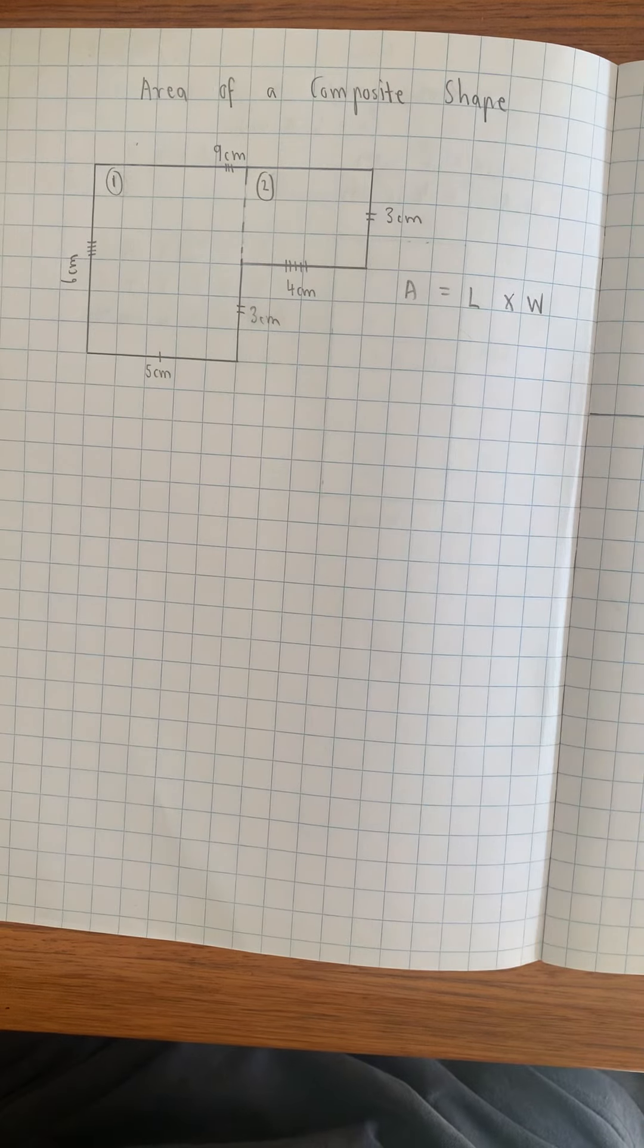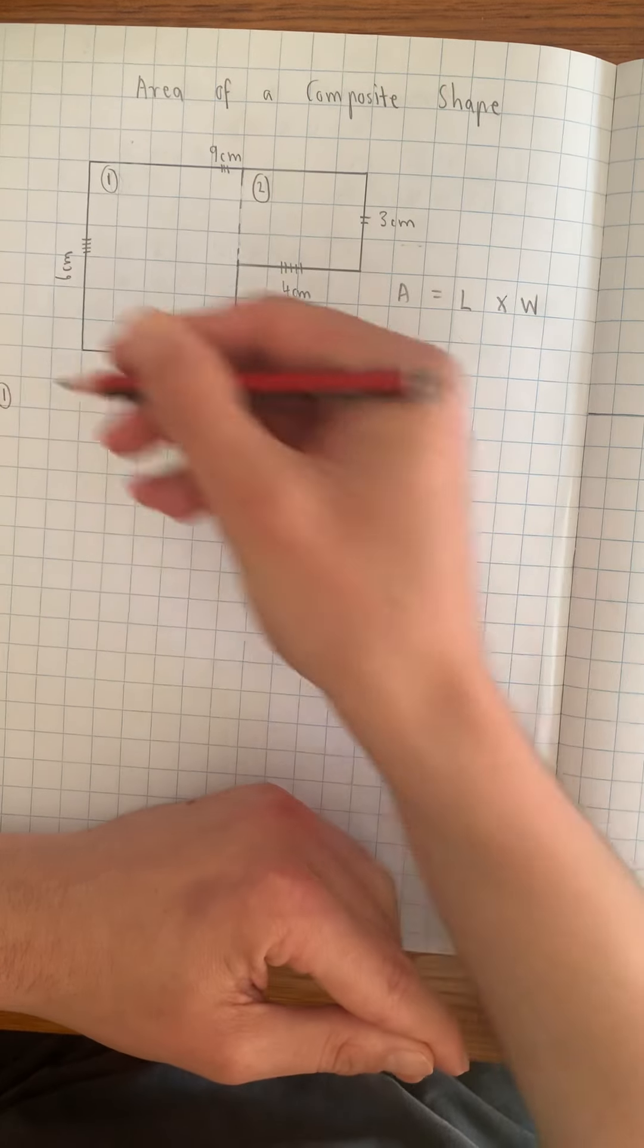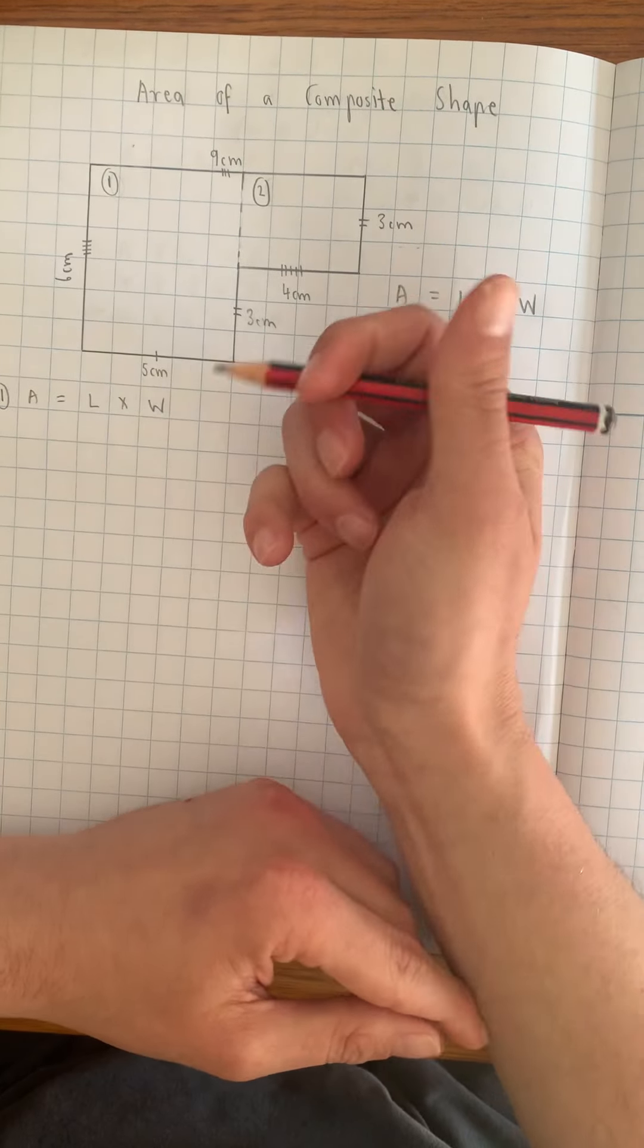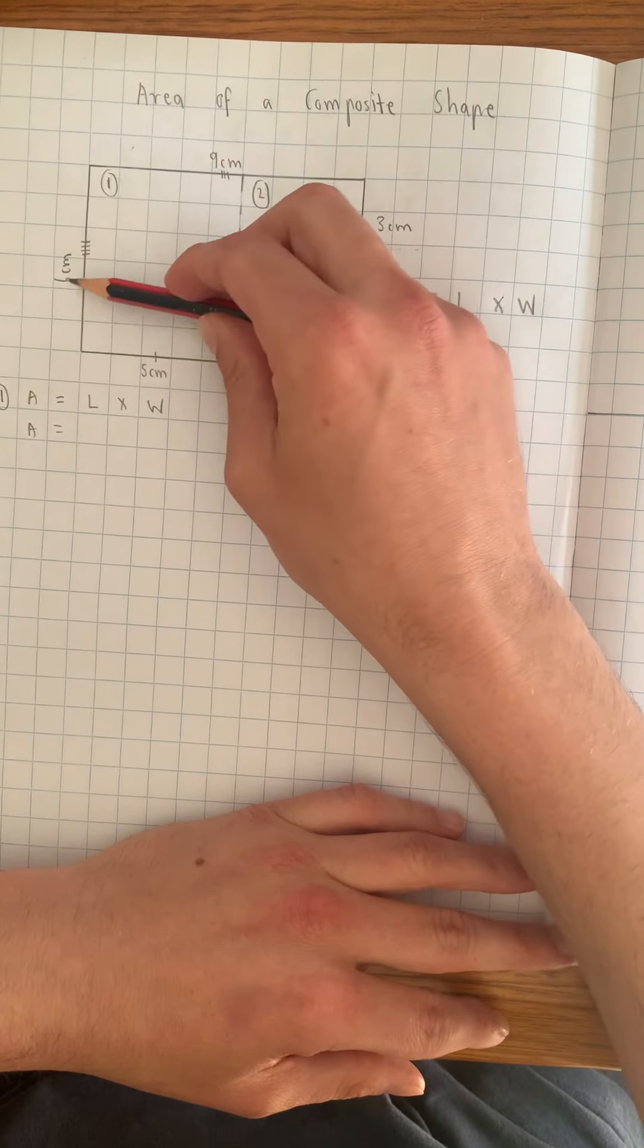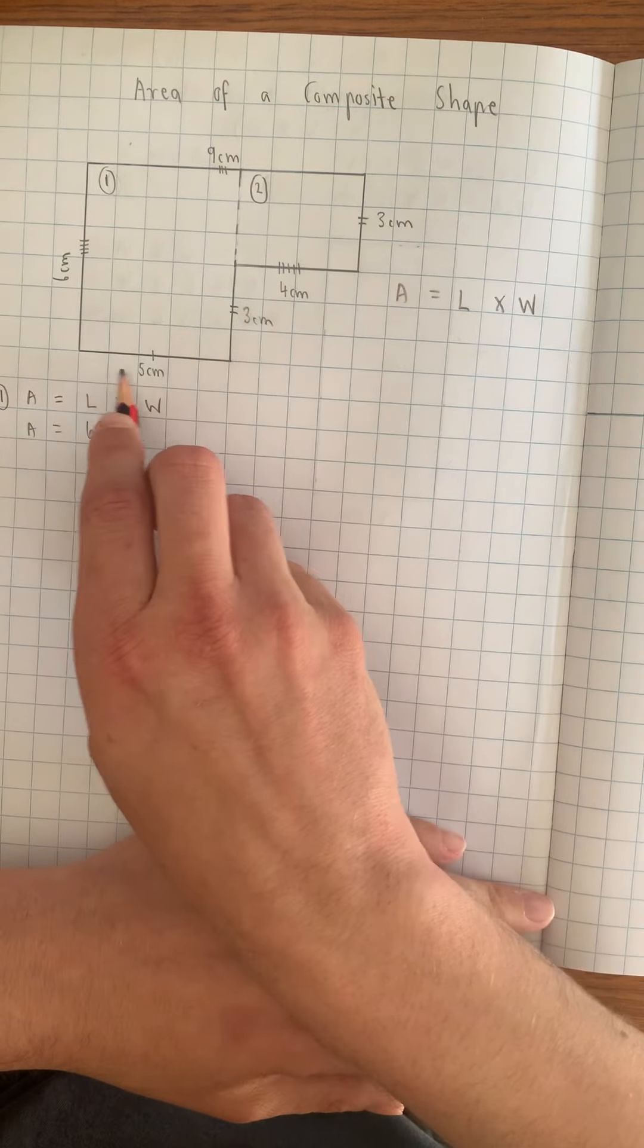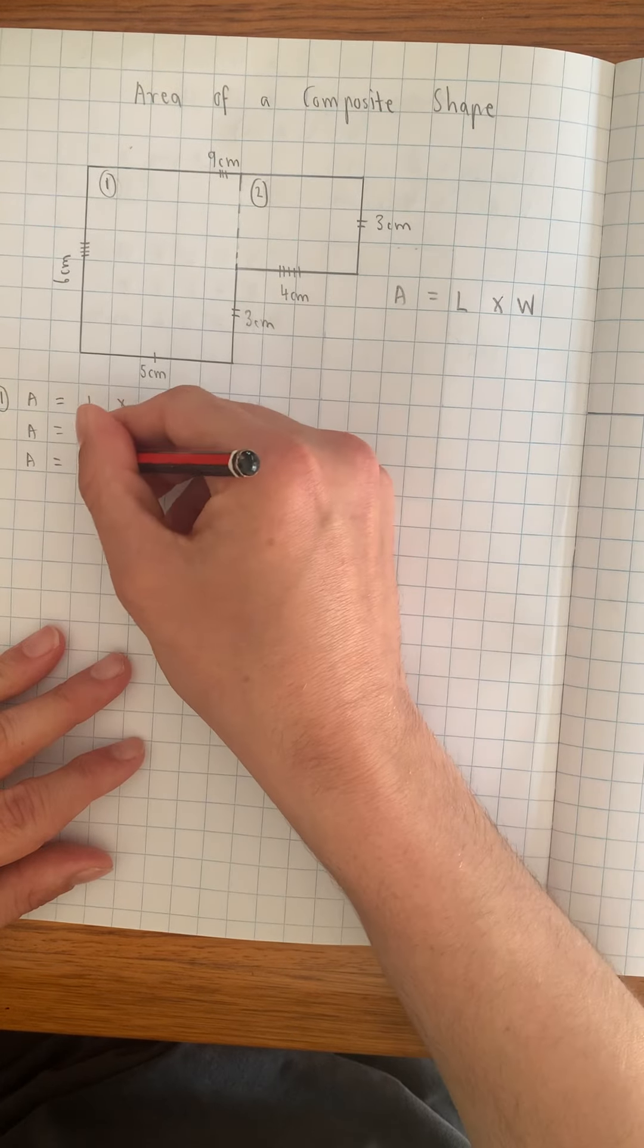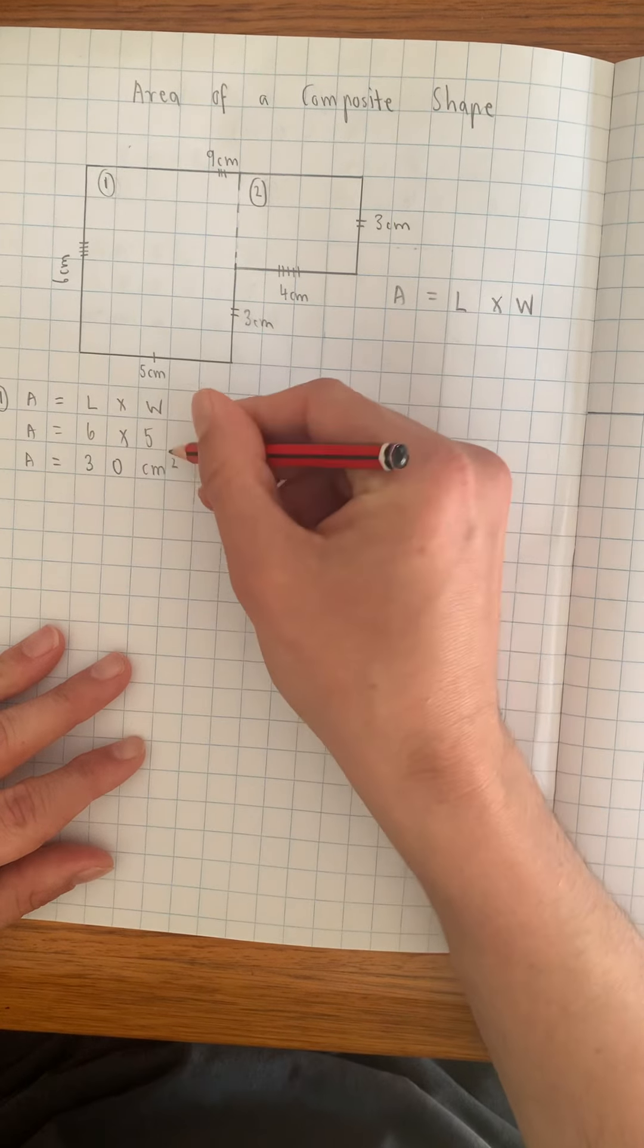And from here, I can use area equals length times width for both shapes. So what I'm going to do down here is write one, and I'm going to write area equals length times width. And then I'm going to find out what the length is. So the length for this particular rectangle is six centimeters, so I'm going to put six there. And the width is down here and that's five centimeters. Now using my knowledge of times tables, six times five is 30. And because it is in centimeters, I'll put centimeters squared.